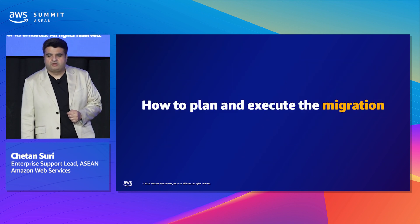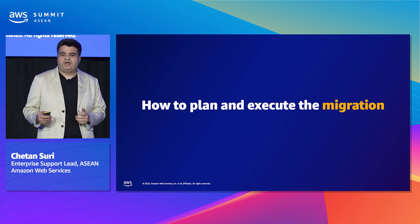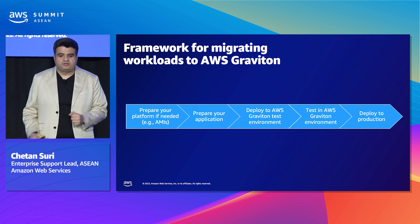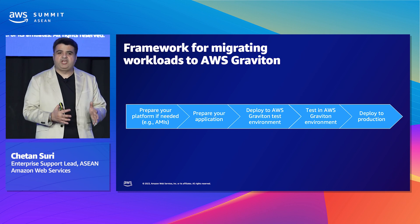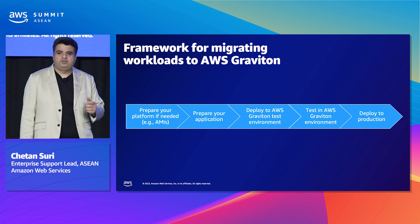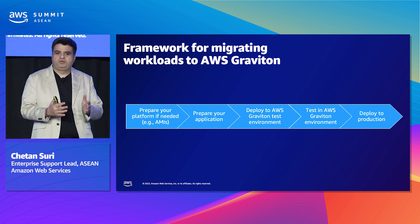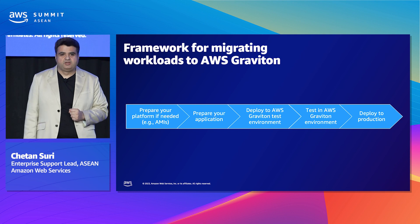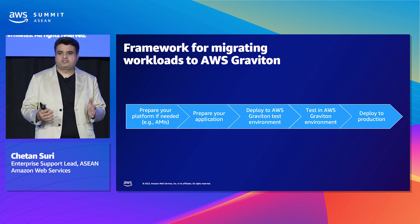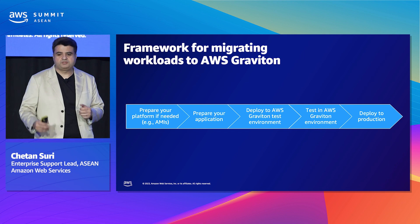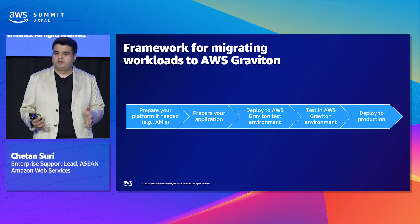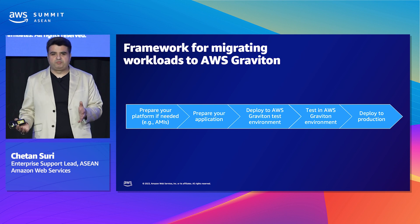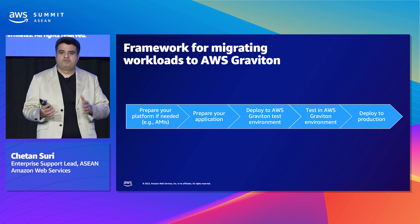Let's see how you can plan and execute the migration to Graviton. There are primarily five stages: first, prepare the AMIs to ensure they are compatible with Graviton-based instances; then prepare the applications, ensuring software is running on the latest versions; deploy to an AWS Graviton test environment; test your application performance; and finally move to production.